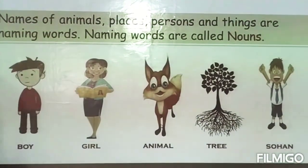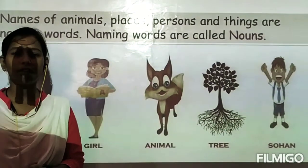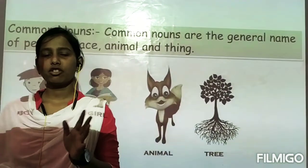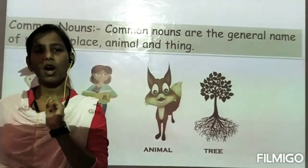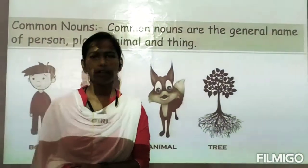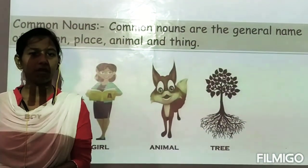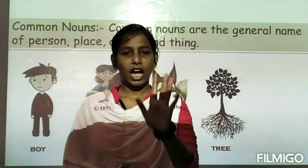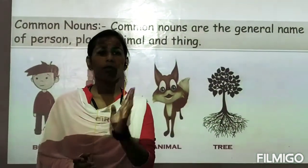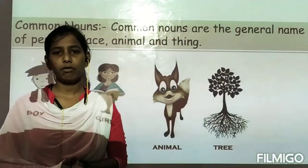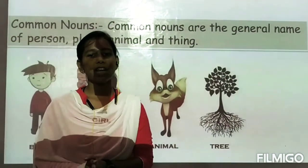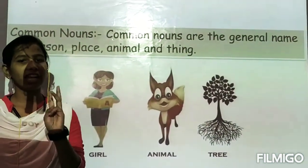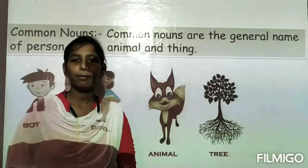The next topic is types of nouns. For class 2, we have only two types of nouns: proper noun and common noun. But for your information, nouns can have 5 kinds: proper noun, common noun, collective noun, abstract noun, and material noun. However, in your syllabus you have three kinds: proper noun, common noun, and collective noun.